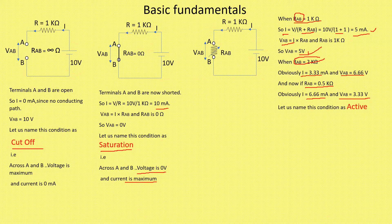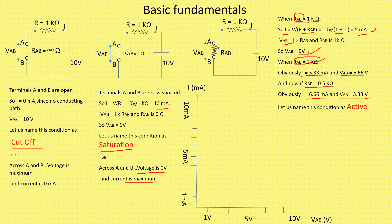Now these three conditions are shown on the graph. This graph is drawn between VAB, the voltage across A and B, and current I. We will draw all these conditions on the graph. We will start with cutoff. In cutoff, current is 0 milliampere, that is I is 0, and VAB is maximum, equal to 10 volts. If I want to draw this point on the graph, this point is for cutoff, and at that time I is equal to 0 milliampere.